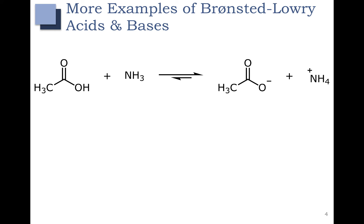Here are some more examples. The carboxylic acid on the left is losing a proton and NH3 is accepting a proton. Based on our Bronsted-Lowery definition, NH3 or ammonia is a base because it is accepting a proton from the carboxylic acid, which makes the carboxylic acid an acid.